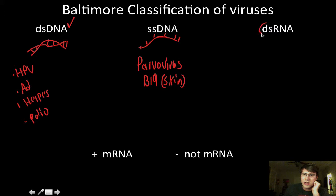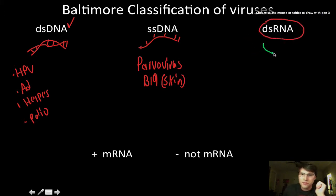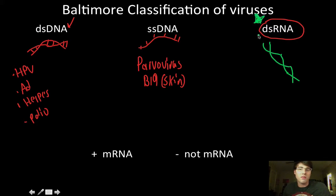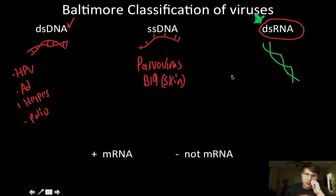There are also viruses that contain double-stranded RNA. This is a weak point in terms of a viral genome because we eukaryotes will never use this — so we've evolved mechanisms that can specifically target it. Examples of viruses that use double-stranded RNA would be Colorado tick fever or rotavirus.